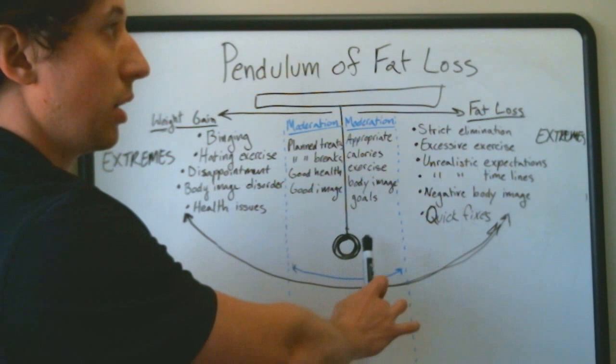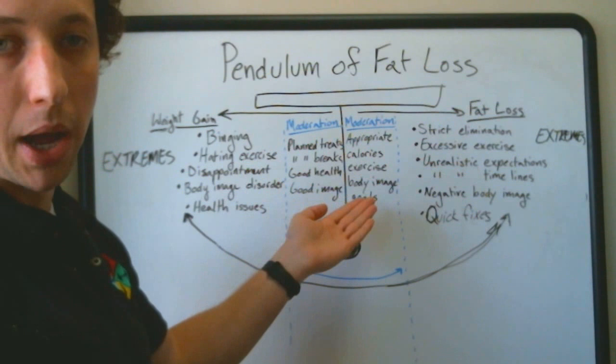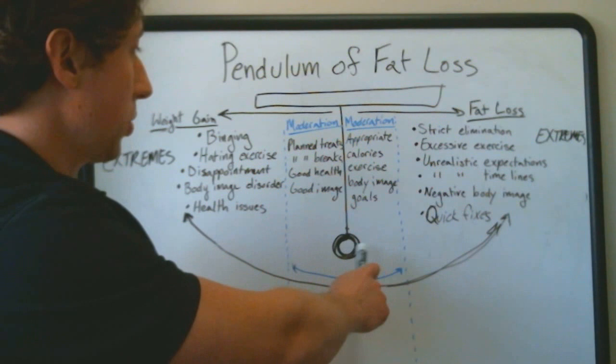When you want to use moderation, you keep the pendulum swinging in this sweet spot. So this is going to be something like an appropriate amount of calorie cut, an appropriate amount of exercise, a healthy body image, and setting positive and appropriate goals for yourself. And if the pendulum ever does swing the other way, we want to do it in moderation as well.